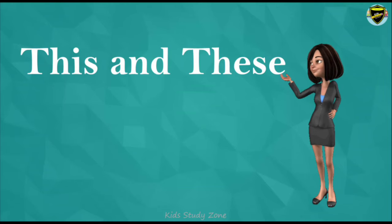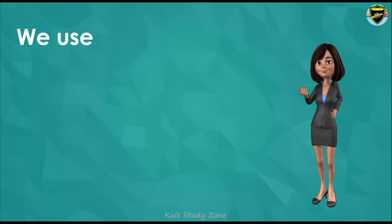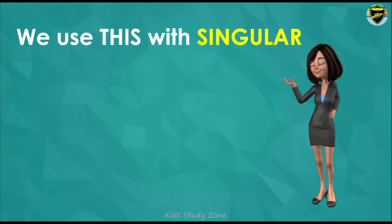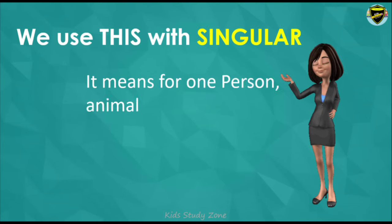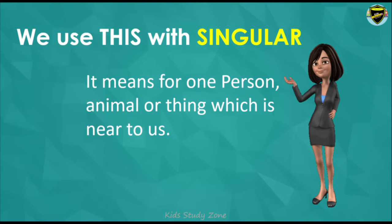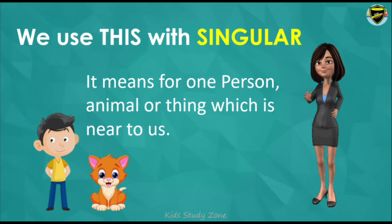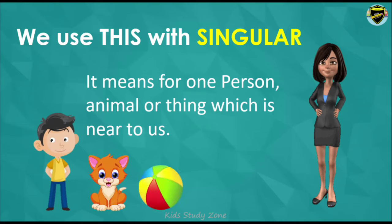In this video we will see when to use 'this' and when to use 'these' in given sentences. We use 'this' with singular — it means one person, animal, or thing which is near to us.